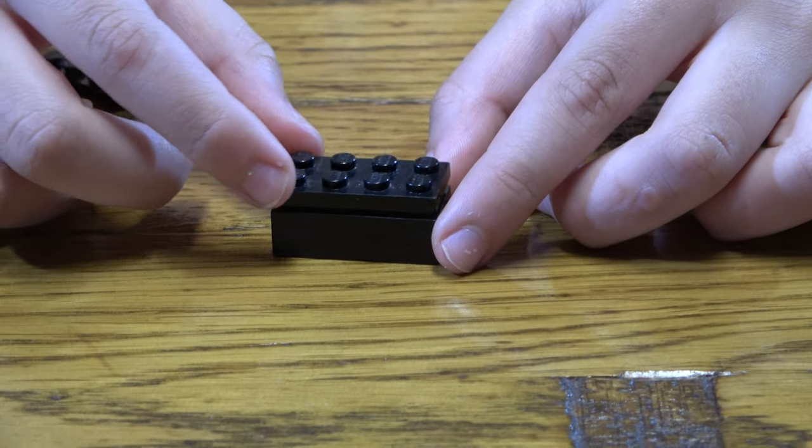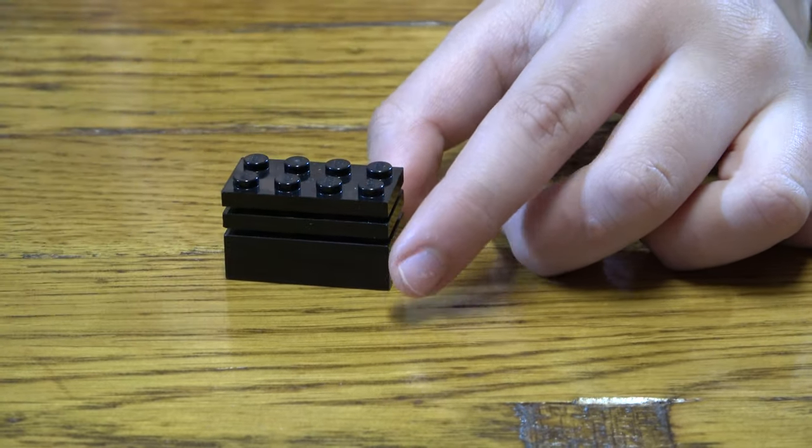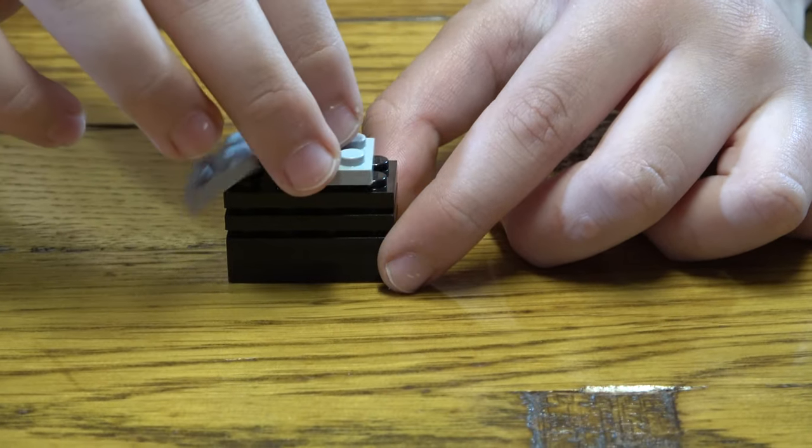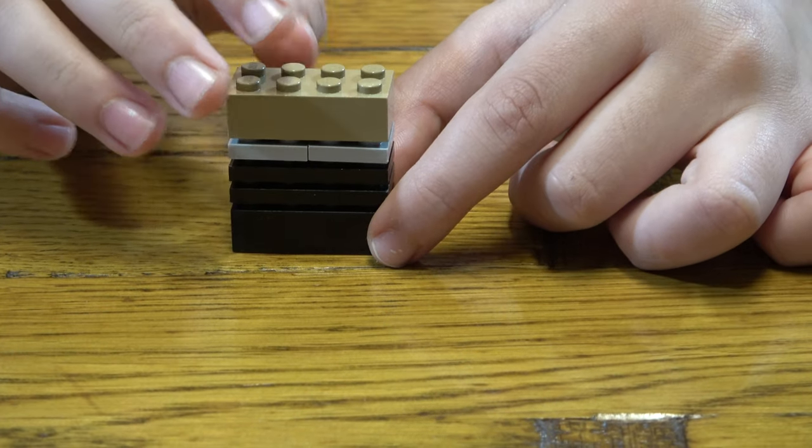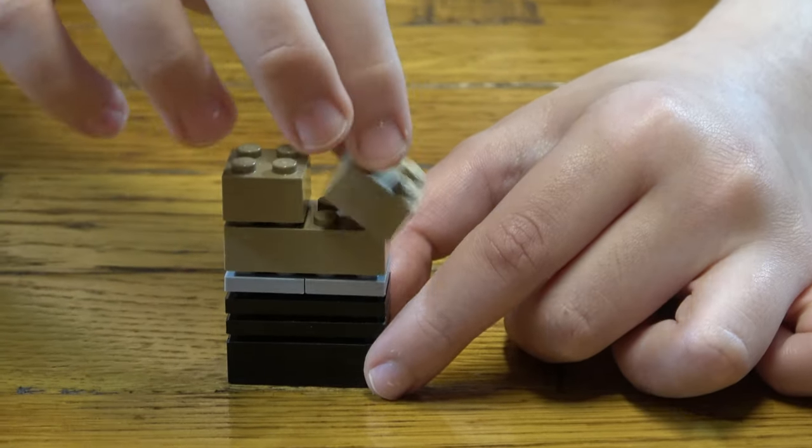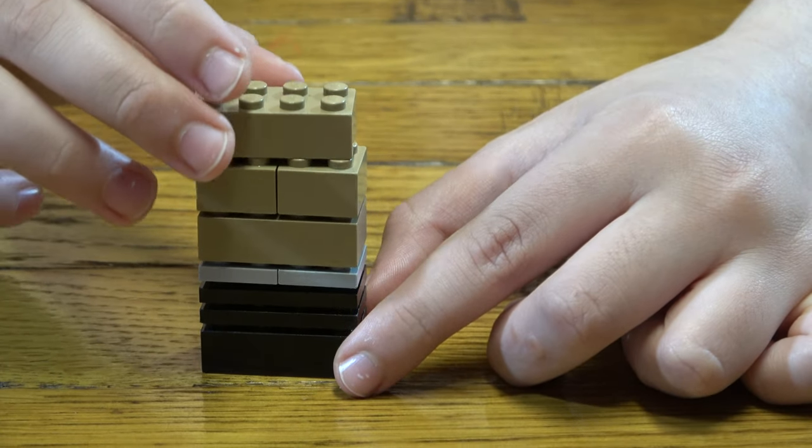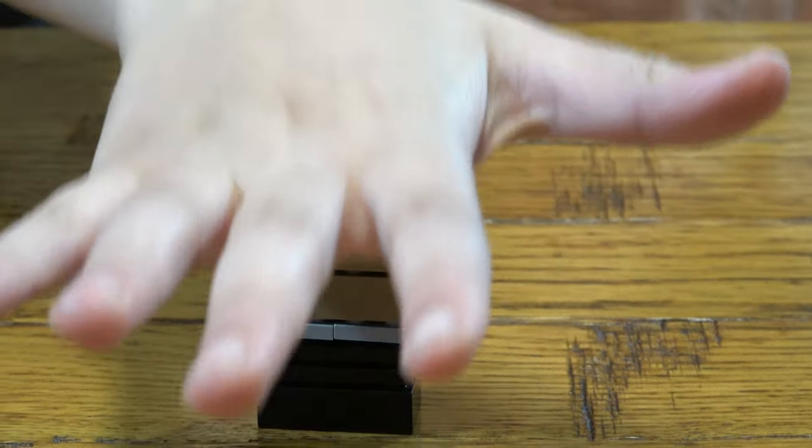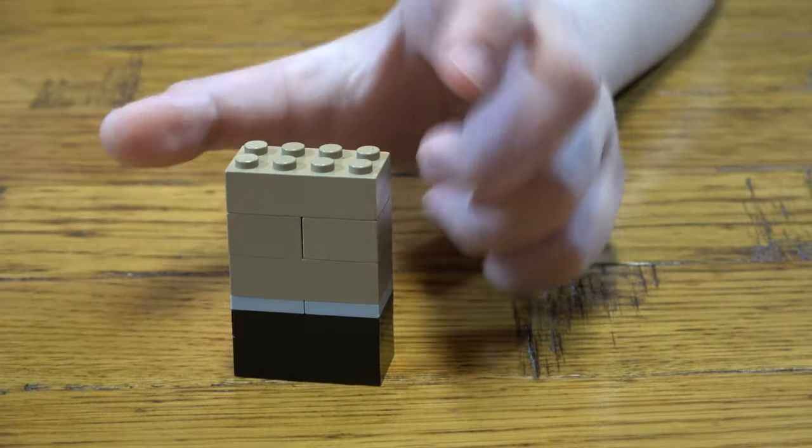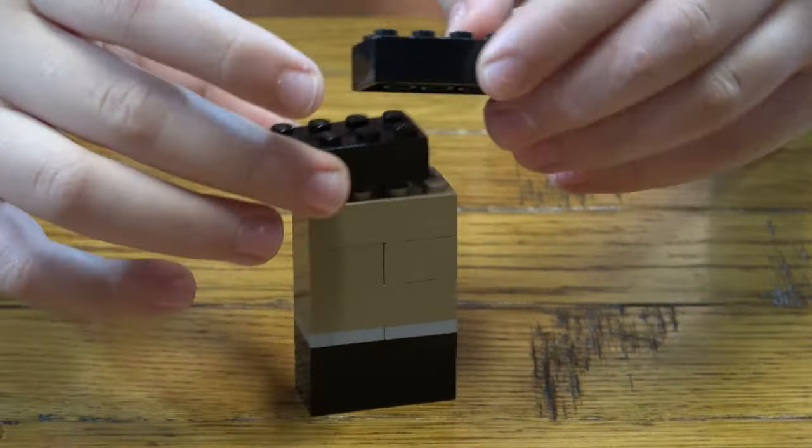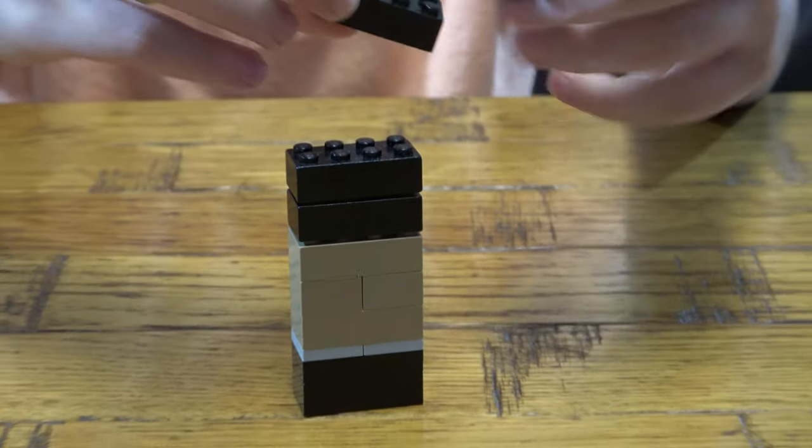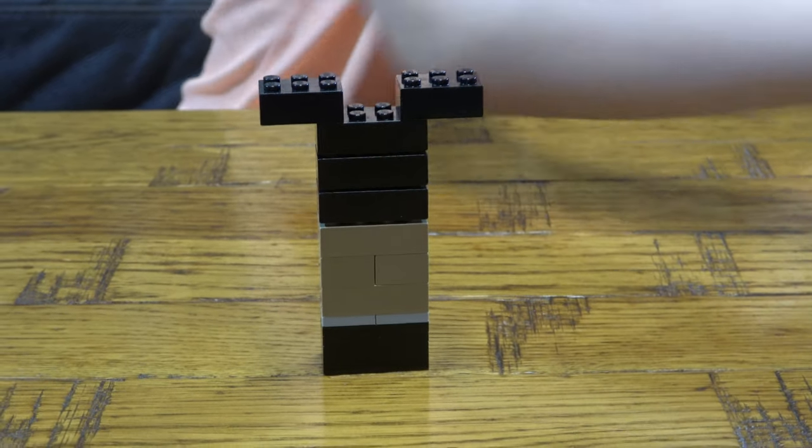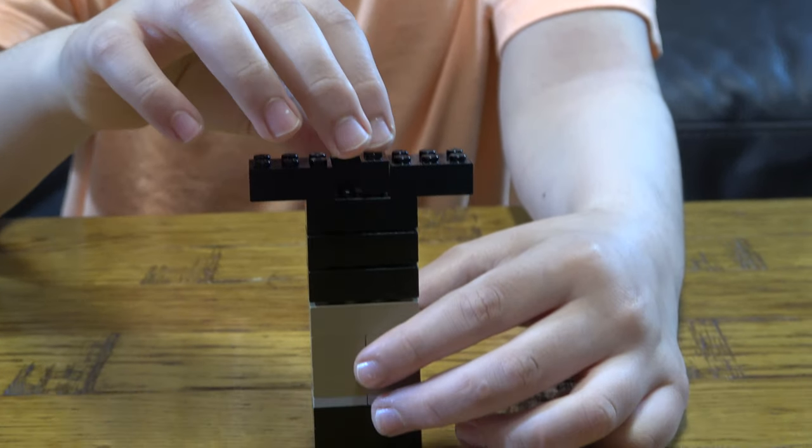First we're gonna get this. I'm gonna do this. Next we're gonna get these two, like so, like so. Then we're gonna get this, and then next we're gonna place, I have to do this because then it will just fall. And then next you place that there.